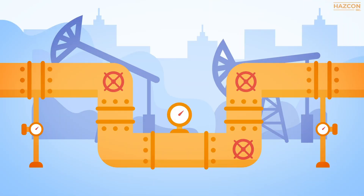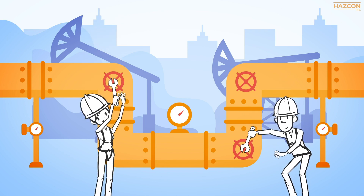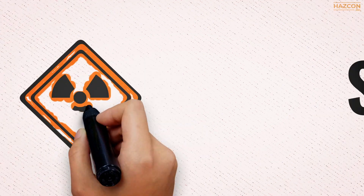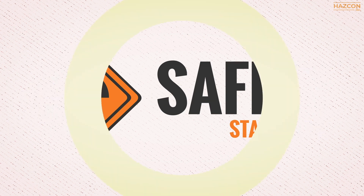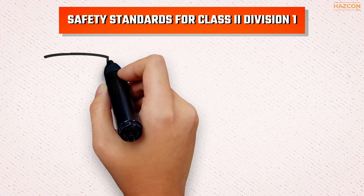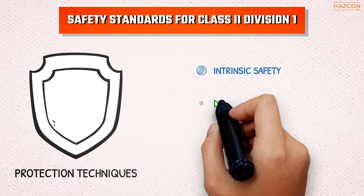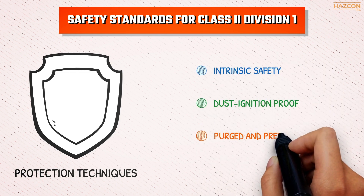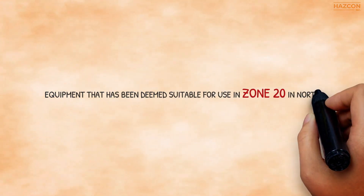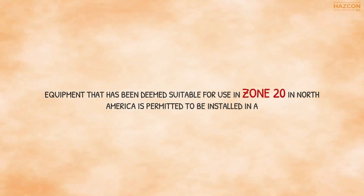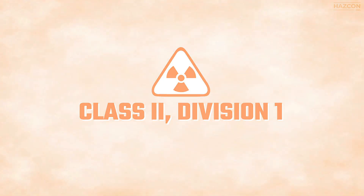Electrical equipment still needs to be installed in hazardous locations where explosive dusts are present. This equipment must therefore be designed, constructed, and certified in compliance with the relevant safety standards. As noted in the standards, Class 2 Division 1 products must be protected by one or more of the following three protection techniques: intrinsic safety, dust ignition proof, and purged and pressurized Type X or Y. Equipment deemed suitable for use in Zone 20 in North America is also permitted to be installed in a Class 2 Division 1 hazardous location.